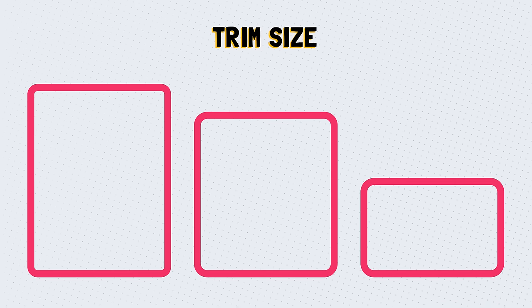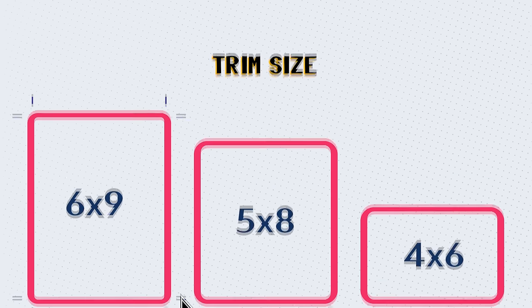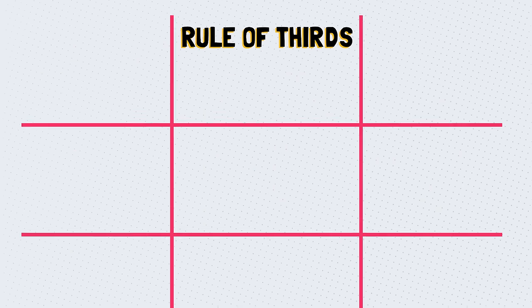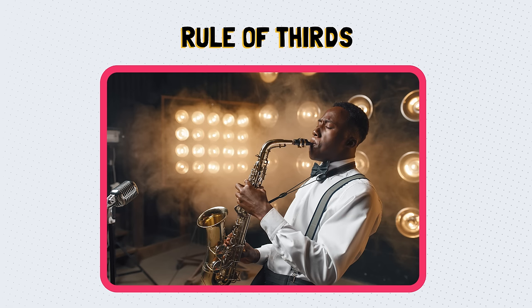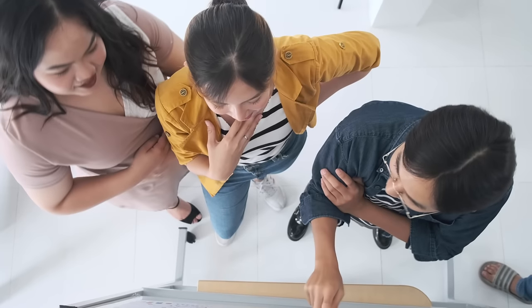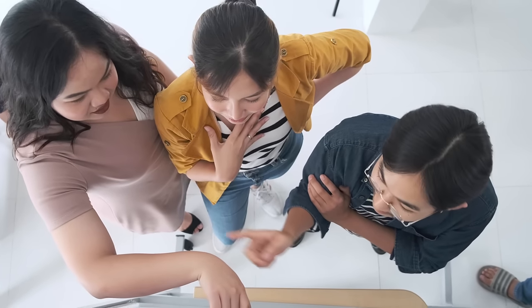Trim size is the final size of a printed project after it's been trimmed. The trim size is guided by the crop marks that are on a printed sheet. Rule of thirds: imagine a 3x3 grid on top of an image or a design. The four spots where the lines intersect indicate the focal point, and these areas are where the most important elements should be placed. In the next lesson, we will take a look at typography.